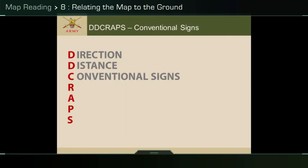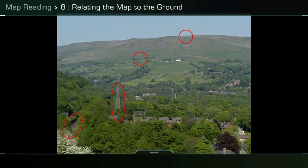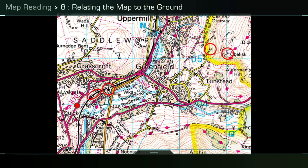Conventional signs: map knowledge of conventional signs will help you identify features on the ground. For example, the church spire and railway circled here are clearly denoted by their map symbols featured on the map.